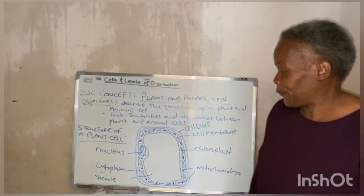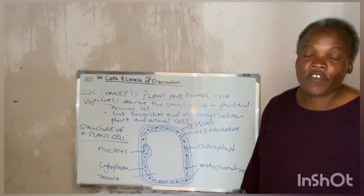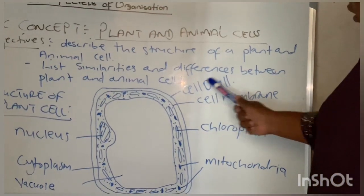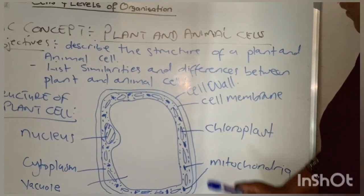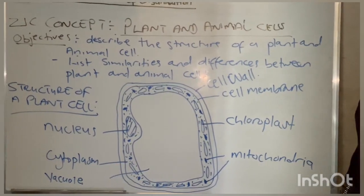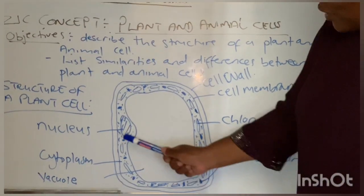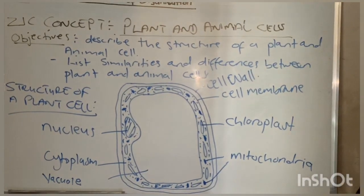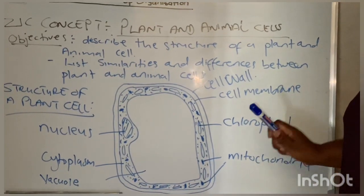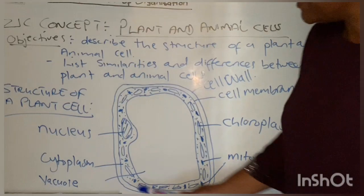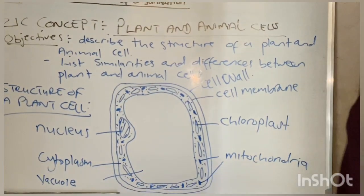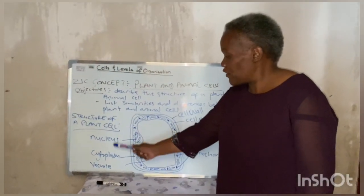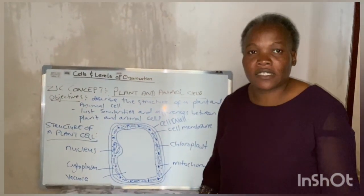Let's start by looking at the structure of a plant cell. It consists of a cell wall, cell membrane, the nucleus, the cytoplasm, and other special organelles such as the chloroplast, the mitochondria, and the vacuole.